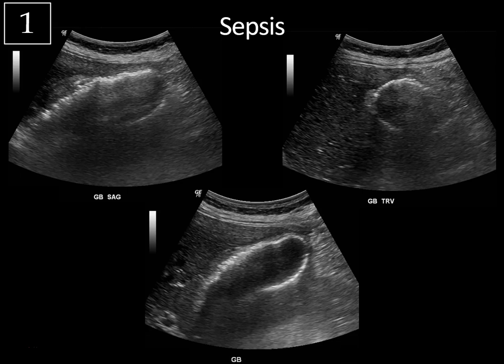So we're looking at sagittal and transverse images of the gallbladder, and notice how echogenic the gallbladder wall is. You might initially think, is this calcification of the gallbladder wall — is this porcelain gallbladder? Well, with calcification, we should have very dark posterior acoustic shadowing, and instead here we have this hazy, dirty shadowing — artifact characteristic of gas within the wall of the gallbladder.